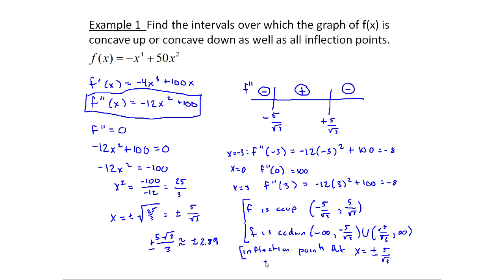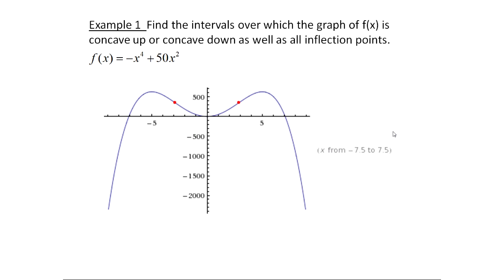Let's look at a graph of this function with the inflection points marked out. The red dots are the inflection points, and notice they're really close to x equals 3. The first part of the graph, from negative infinity up to that negative 5 over the square root of 3, is concave down — it looks like a spoon with the curved part facing down. Then it's concave up in the middle interval — the curved part facing up. And from the positive inflection point onward, it's concave down again.